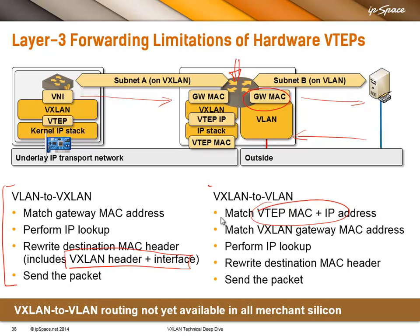The switch then needs to decapsulate the VXLAN packet, do a MAC lookup, and realize that the packet is again destined for itself — so it needs to do another IP lookup, rewrite the destination MAC header, and send the packet. This sequence is too much for the existing Trident 2 chipset. Intel FM6000 looks like it can do it, but Trident 2 cannot do it at line rate.